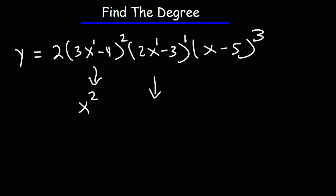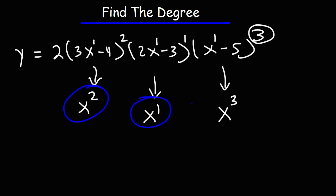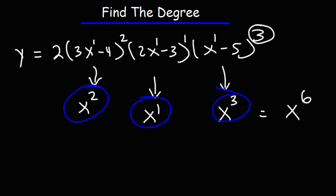For the next factor, x to the first raised to the 1st: 1 times 1 is 1, so the highest term is x to the first. For the next, x to the first raised to the third: 1 times 3 is 3, so the highest term is x cubed. Now these factors are multiplied, not added, so we multiply x squared times x times x cubed by adding the exponents: 2 plus 1 plus 3 is 6. So this polynomial has a degree of 6.